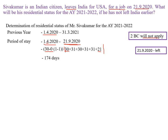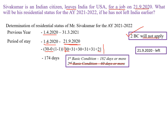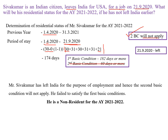Compare with the first basic condition, which is 182 days. The person has not satisfied the first basic condition. We should not compare with the second condition because he is an exempted individual — he left India for employment, so the second basic condition will not apply. Since he did not satisfy any of the basic conditions, there is no need to go to the additional conditions. Straight away: he is a non-resident. The person left India for employment and failed to satisfy the first basic condition, so he is a non-resident for the assessment year 21-22.